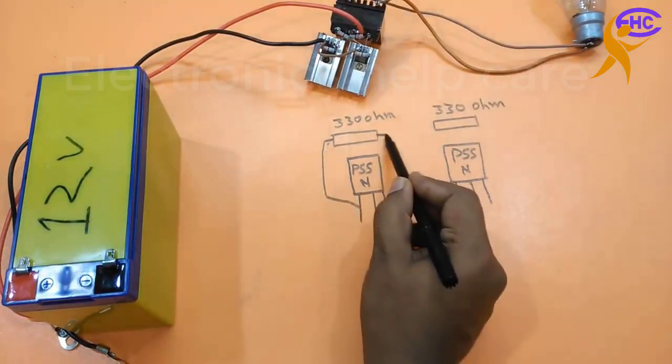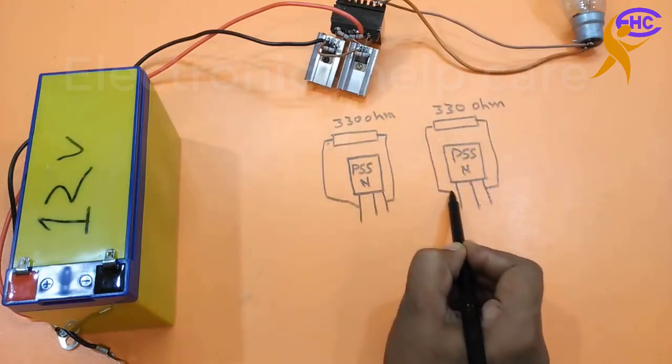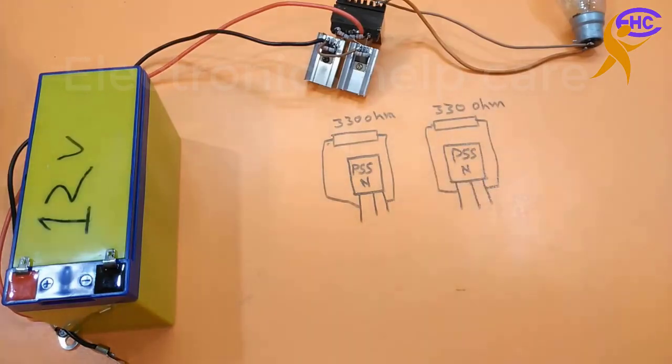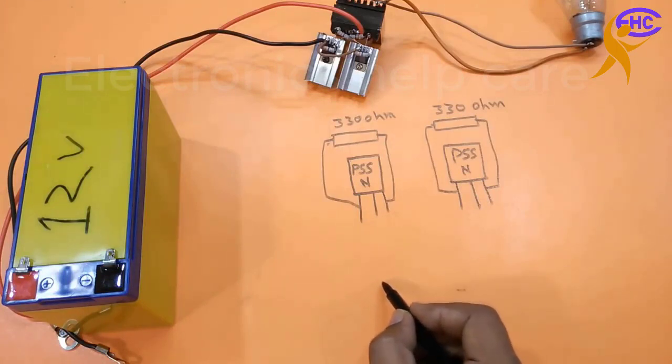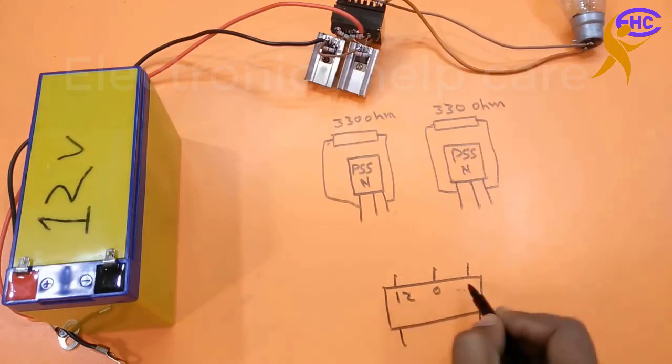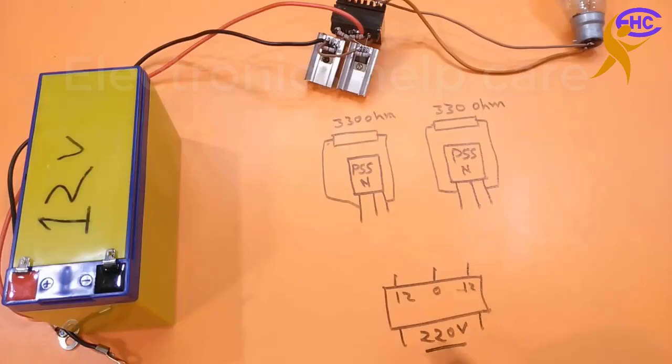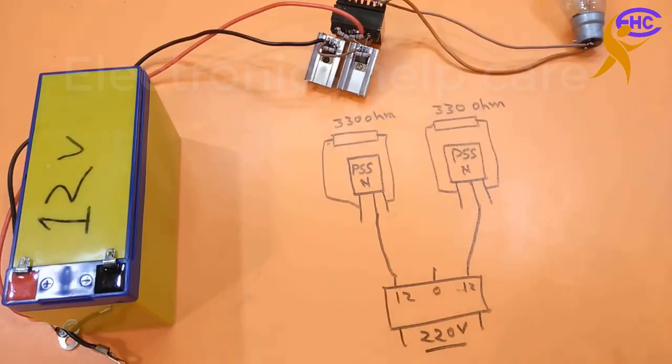The 300 ohm resistor goes to the gate and source. This is the transformer, 12-0-12 and 220 volts. In the 12-0-12 there are 15 to 15 turns, and for AC 220 there are 270 turns.